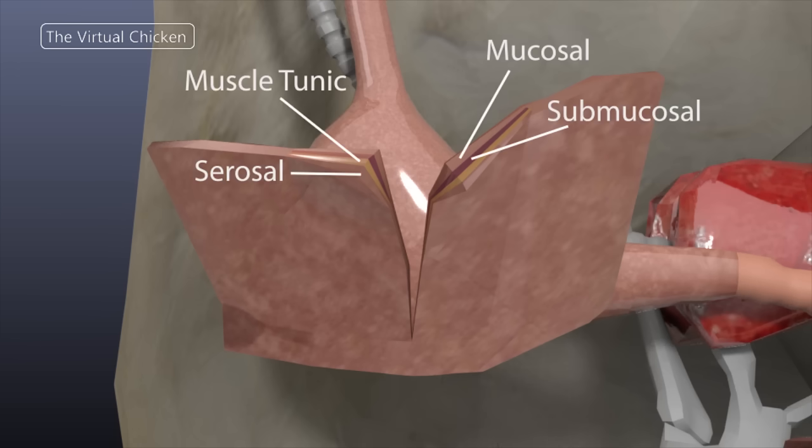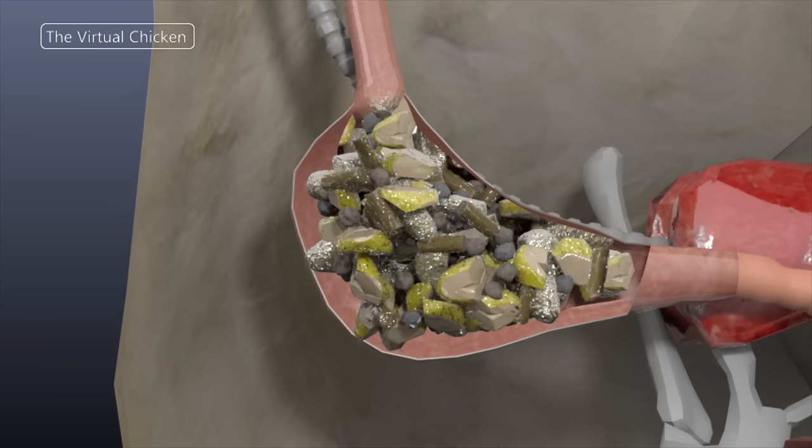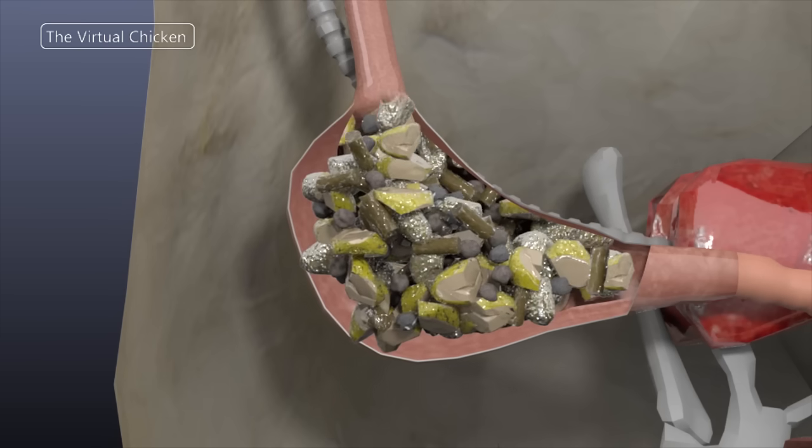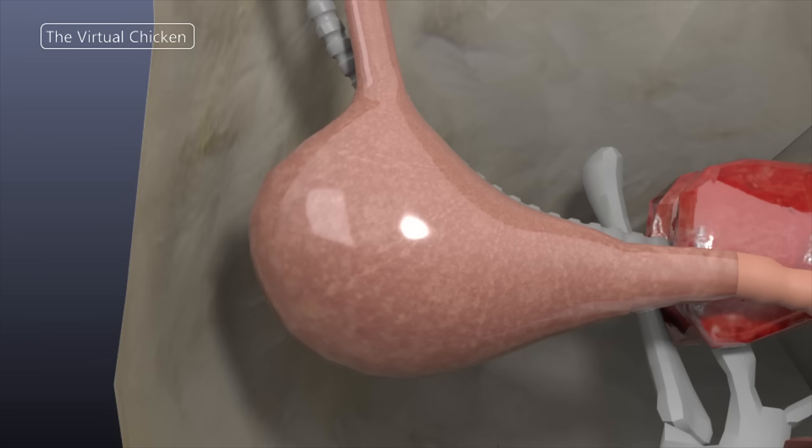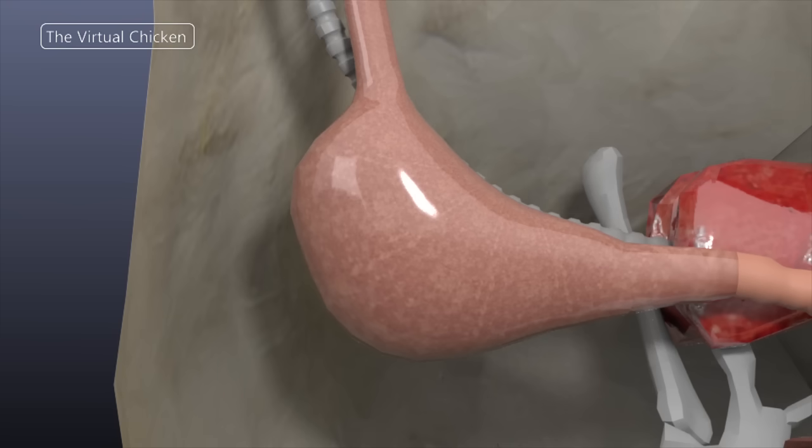The main function of the crop is to hold food in storage until it can be released to the stomach or the proventriculus. The crop fills only after the proventriculus is full. Food can remain in the crop for up to 12 hours until it is transferred via peristaltic action. No actual digestion takes place in the crop, as there are no digestive chemicals secreted there to begin the process.